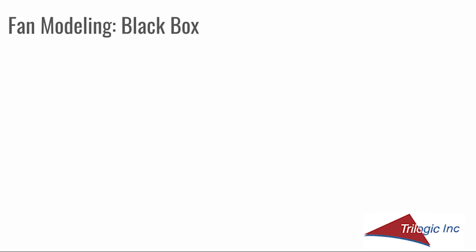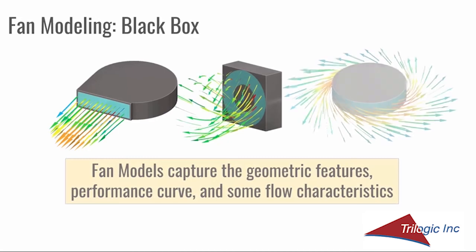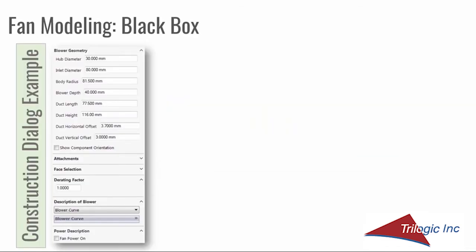One aspect of the black box approach is to capture some of the characteristics of the exit velocity in addition to the geometric and fan performance characteristics. The benefit is a low computational cost and takes advantage of all the information typically available to a system integrator. The images shown are taken from Flowtherm XT using the centrifugal fan, fan, and radial fan smart parts, giving an idea of what the exit velocity looks like. Looking at the property sheet of the centrifugal fan as an example, we can understand the type of information used to develop the model.